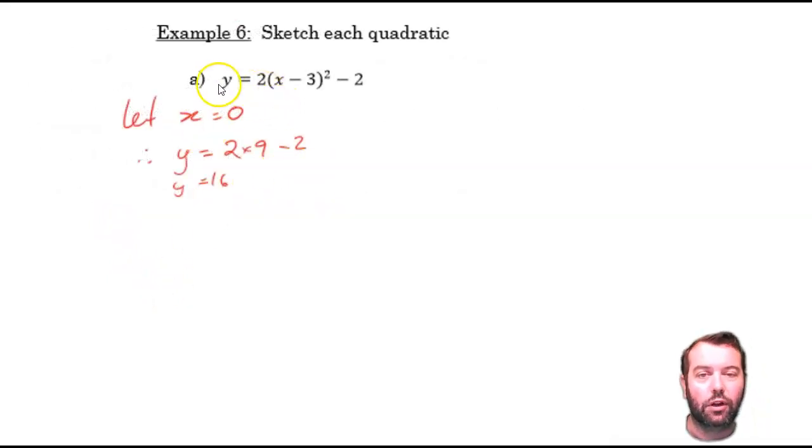Let x equal 0. And then I get 0 minus 3 squared is 9. Two lots of 9 are 18. Minus 2 is 16. So, my y-intercept is 16.